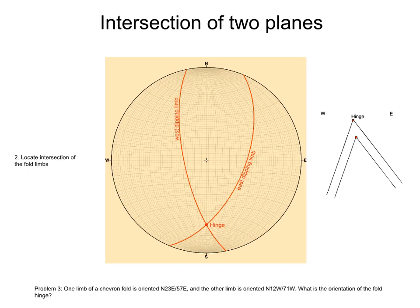The intersection of the two limbs is the red dot. This is the hinge of the fold. We then rotate the overlay so that the intersection of the two limbs falls on a straight line in the grid. Conveniently, the intersection is already on the south line of the grid.